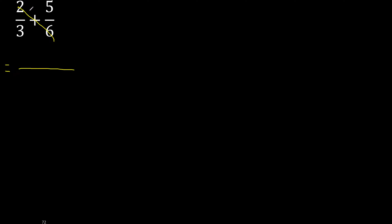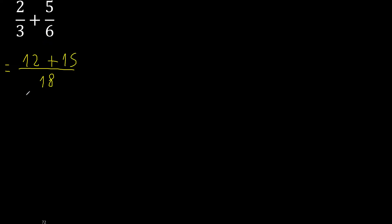First, multiply like this: 6 multiplied by 2 is 12, 3 multiplied by 5 is 15, 3 multiplied by 6 is 18.